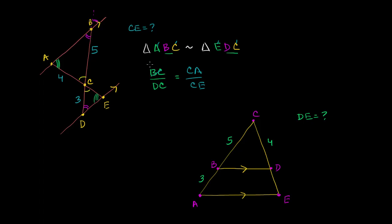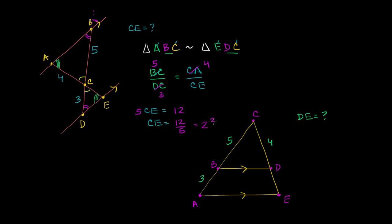We know BC is 5, DC is 3, and CA is 4. Now we can solve for CE. Cross-multiplying, we get 5 times CE equals 3 times 4, which equals 12. So CE equals 12 over 5, which is the same as 2 and 2-fifths, or 2.4. We were able to use similarity to figure out this side, knowing that the ratio between corresponding sides are the same.